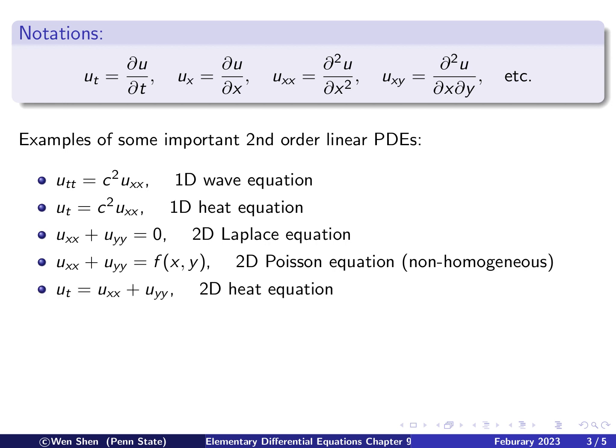And the next is a 2D heat equation. So then the unknown here depends on x, y, and t. So we have u_t equal u_xx plus u_yy.